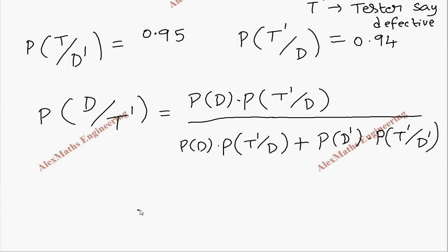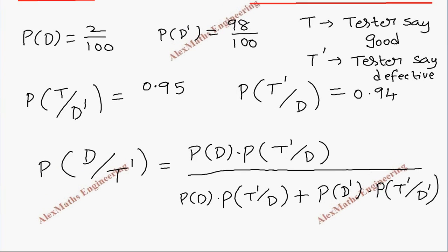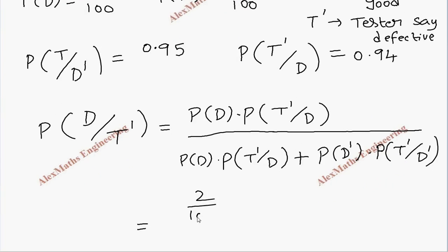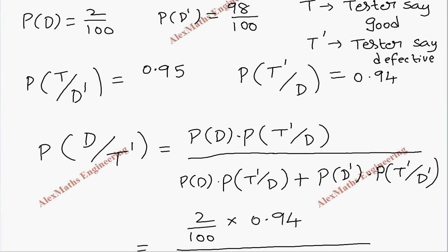Now we are going to see the values. So P of D which is 2 by 100. Now I need T dash by D which is available in the question, which is 0.94. Then whole division, we have to copy this: 2 by 100 into 0.94. D dash is 98%, so 98 by 100 into T dash by D dash. But here...